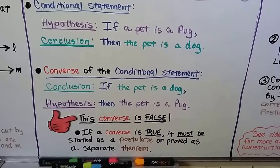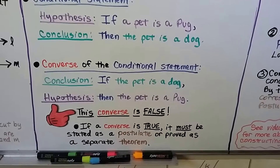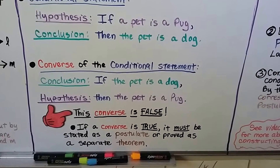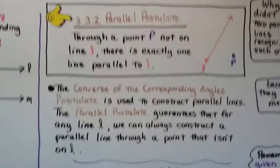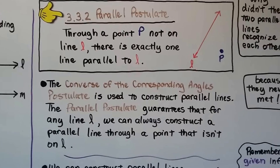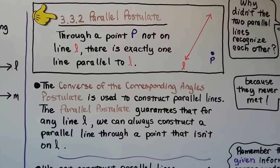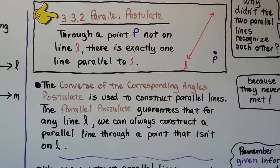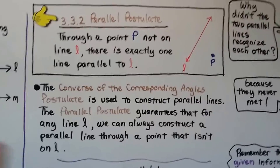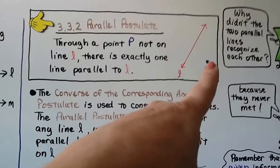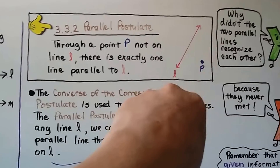Converses can be false, and they can also be true. If a converse is true, it must be stated as a postulate or proved as a separate theorem. Here's another postulate — the Parallel Postulate: through a point P not on line L, there is exactly one line parallel to L. So if we've got line L and a point P that's not on it, we can draw exactly one line parallel to L through P.